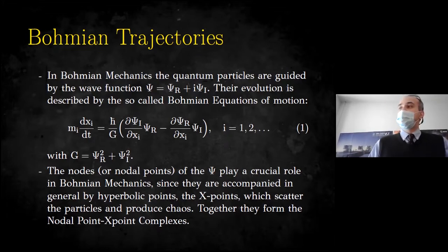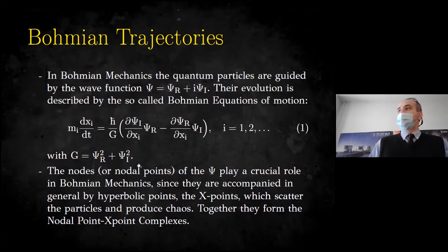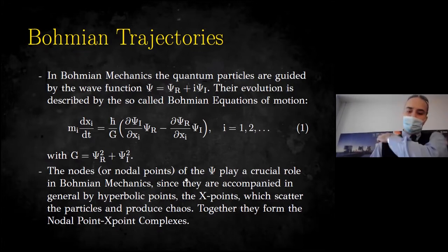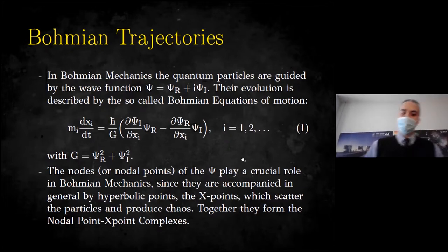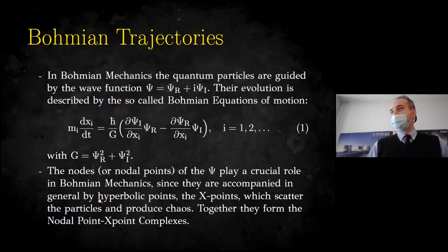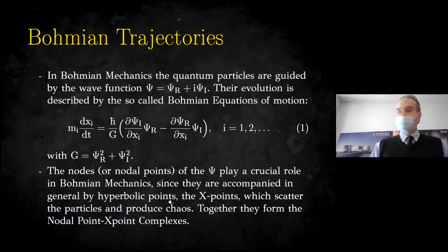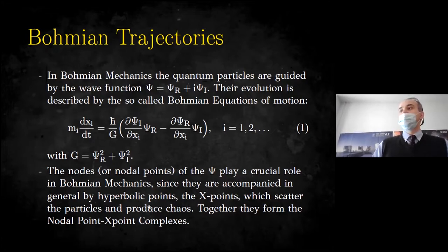Chaos in Bohmian quantum mechanics has been found to be produced in the close neighborhood of the nodal points of the wave function. The nodal points are the positions where the wave function psi becomes zero. The nodal points play a crucial role since they are always accompanied by hyperbolic points — the so-called x-points — which scatter the incoming trajectories. The cumulative action of many such scattering events is responsible for the generation of chaos. The nodal points, along with their fellows the x-points, form what we define as a nodal point x-point complex.